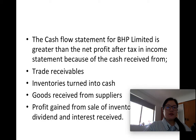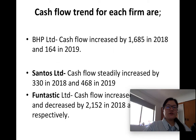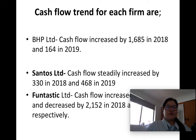The cash flow for BPH Limited is greater than the net profit after tax in the income statement because of cash received from trade receivables, inventories converted into cash, good receipts from suppliers, profit gained from sales of inventories, dividends, and interest receipts. Cash flow trends for each firm are: BPH Limited's cash flow increased by $1,685 in 2018 and $164 in 2019. Santos Limited's cash flow steadily increased by $330 in 2018 and $468 in 2019. Fantastic Limited's cash flow increased by $7,432 in 2018 and decreased by $2,152 in 2019.